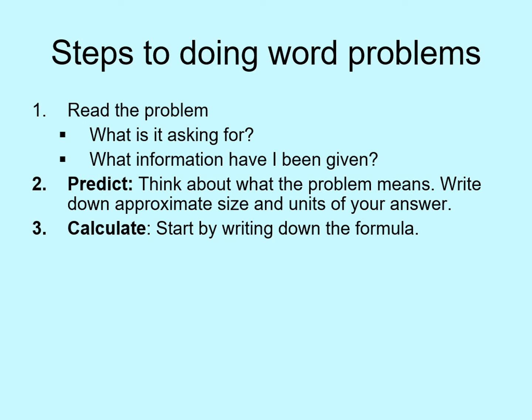Step three is writing down the formula — in other words, see what algebraic formula relates the things you know to the things you're trying to learn. Step four is looking up other information. Often you'll need to go out and find something like the speed of light, or the mass of a planet or star, or some other important number that has to go into the problem, so you should do that at this point.